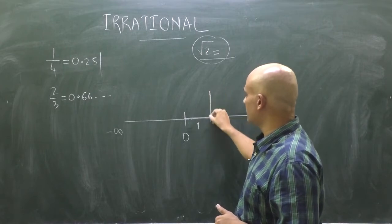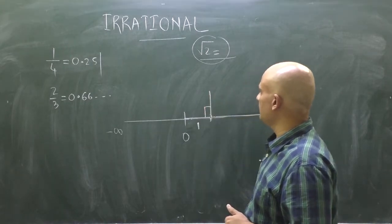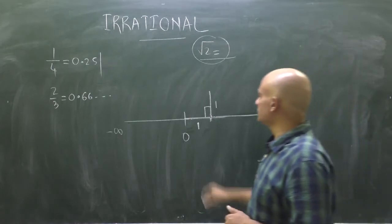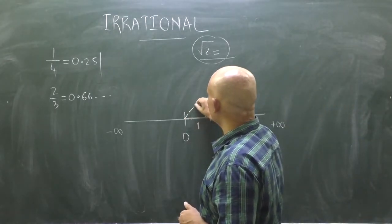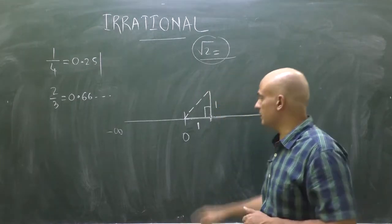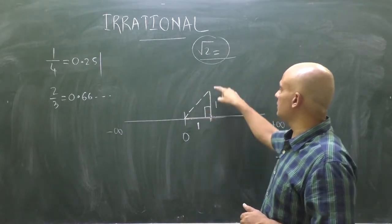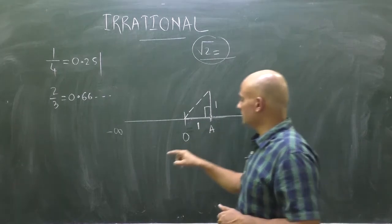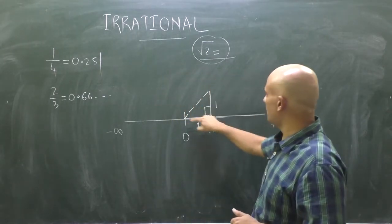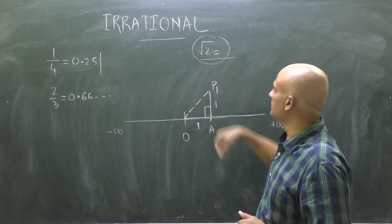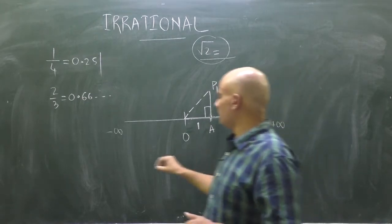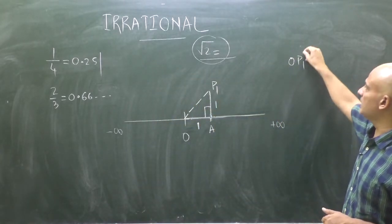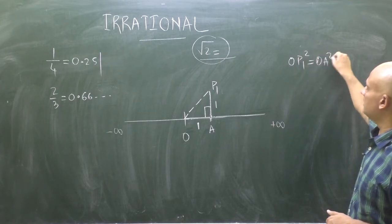For drawing root 2, let's measure a unit distance of one centimeter on this line, and from this one centimeter draw a perpendicular on this line of length one centimeter again. Using Pythagoras theorem we can find the hypotenuse of this right triangle. Let this point be A and let this point be P1, so we need to find OP1.